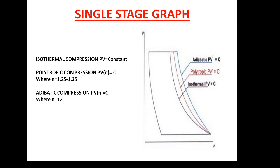As you can see, the n value is 1.4 in adiabatic. Now talking about the work done in single-stage compression: the work done in adiabatic is the maximum — the maximum amount of work done is carried out during adiabatic compression. In isothermal compression, the amount of work done is the least, because heat is continuously removed. The physical process that actually happens is the polytropic process, which falls between isothermal and adiabatic. So the least amount of work done is isothermal, then polytropic, and then adiabatic.